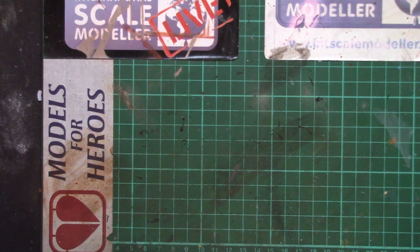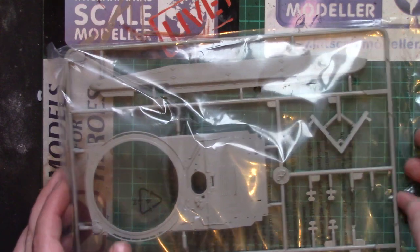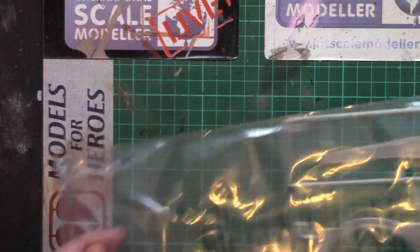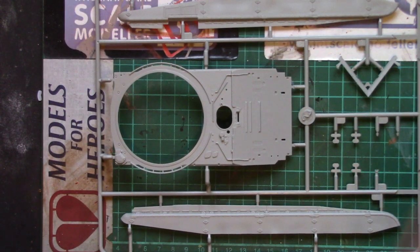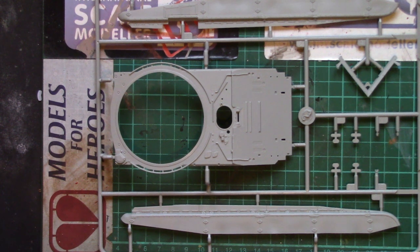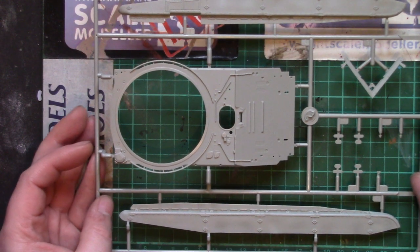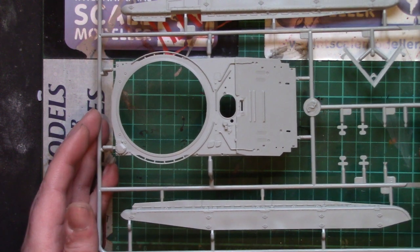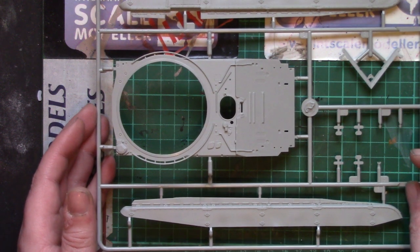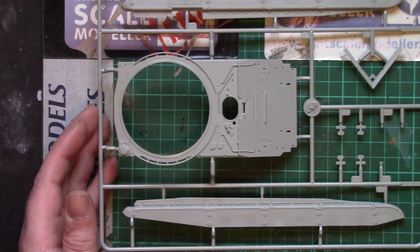Next sprue is side skirts and another front upper hull which is probably for a standard T-72. Again no flash, no obvious mis-molds that I can see.